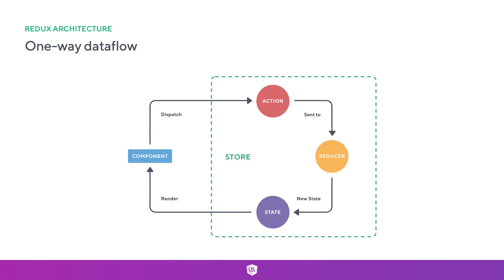One-way data flow is important to remember with the Redux architecture, and this also ties in with immutable operations, which we'll cover in the next video. Let's move on to talk about the difference between mutable and immutable operations in JavaScript.